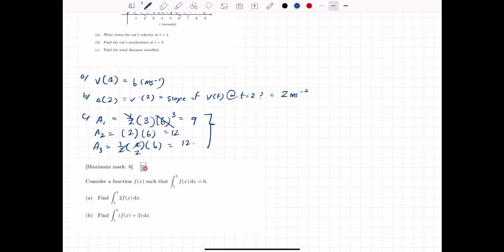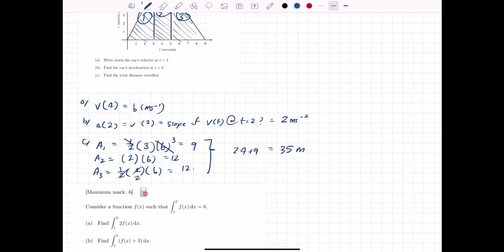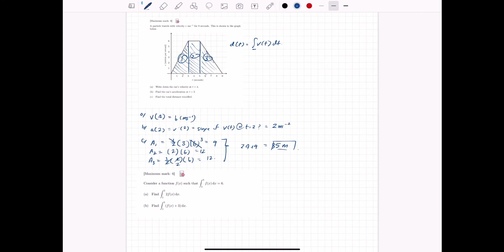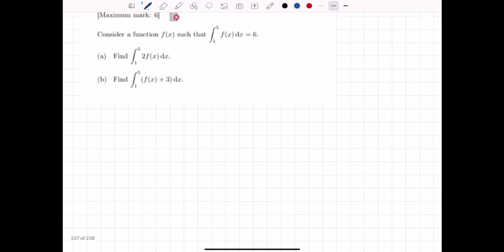So really all we have to do is add this all up. Twelve plus twelve is twenty-four. Plus nine is thirty-three. So the answer is distance. So meters. Thirty-three meters. Hopefully that makes sense. Let's go on to the next one.